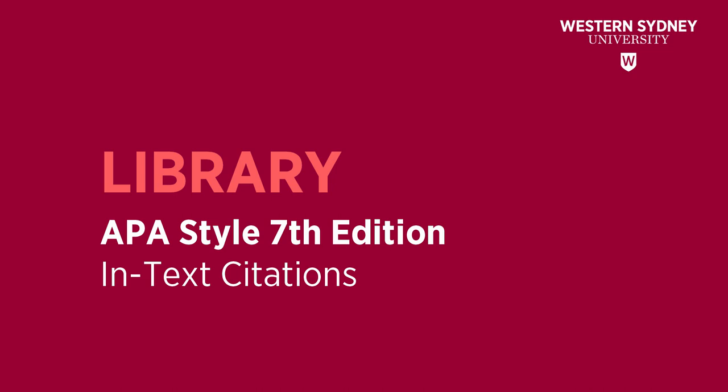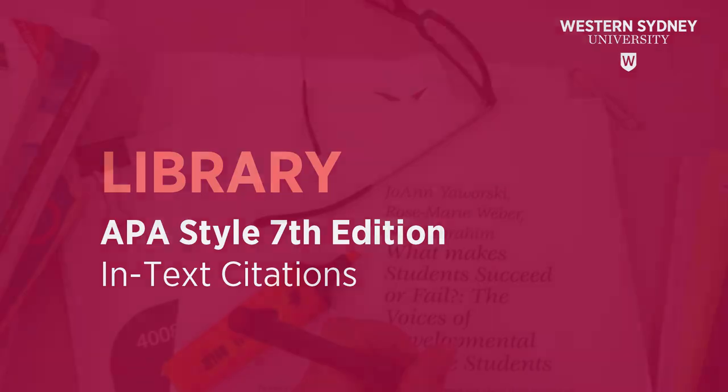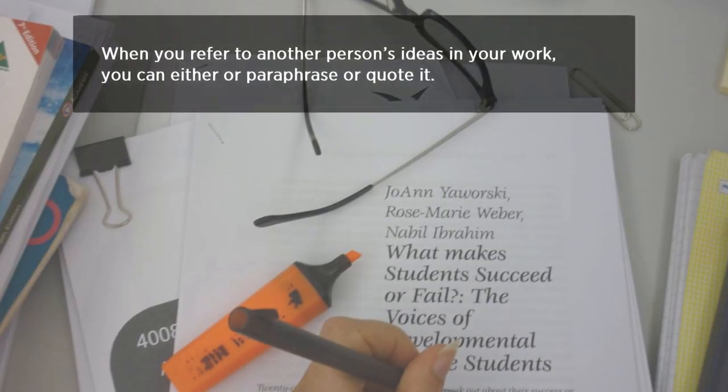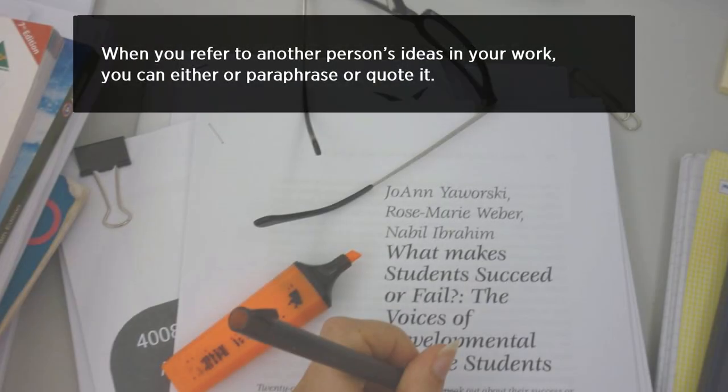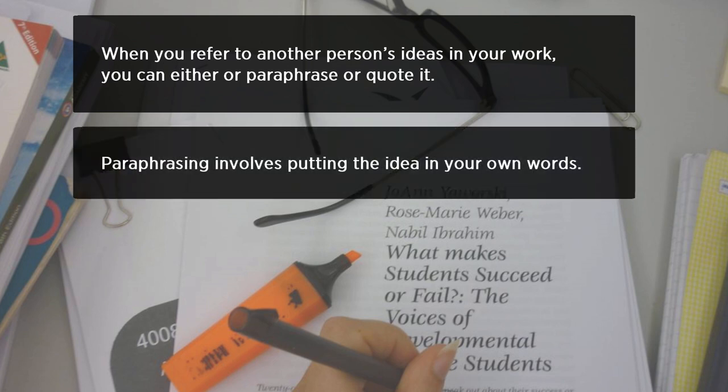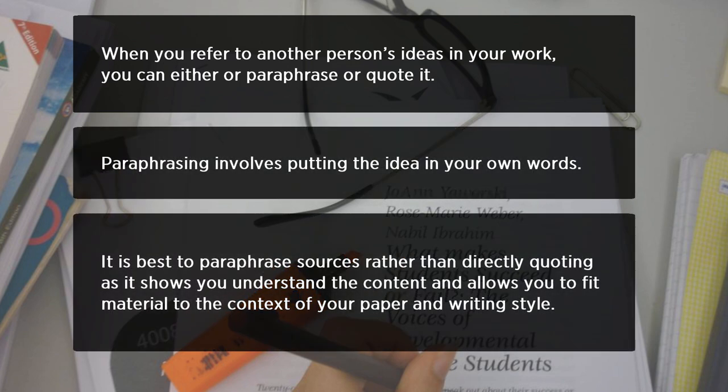This library video will help you with in-text citation using the APA style 7th edition. When you refer to another person's ideas in your work, you can either paraphrase or quote it. Paraphrasing involves putting the idea in your own words. It is best to paraphrase sources rather than directly quoting, as it shows you understand the content and allows you to fit material to the context of your paper and writing style.